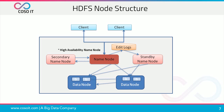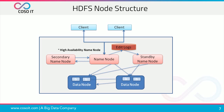Prior to Hadoop 2, the name node was a single point of failure, and the secondary name node periodically used to read the file system change logs and update it. In Hadoop 2, the HDFS high availability feature provides support for multiple name nodes. In a typical high availability cluster, two separate machines are configured as name nodes. At any point in time, exactly one name node is in active state and the other is in standby state. The active node durably logs a record of modifications to an edit log file stored in a shared directory.